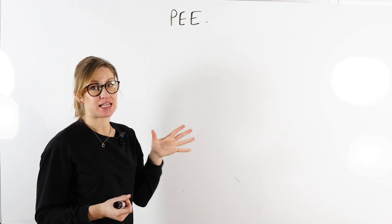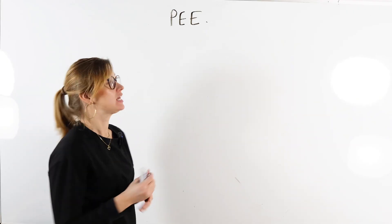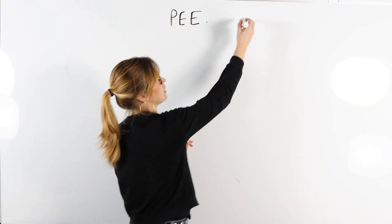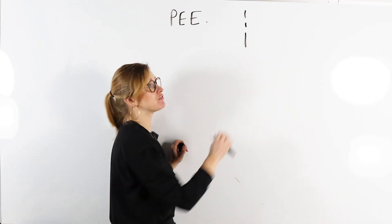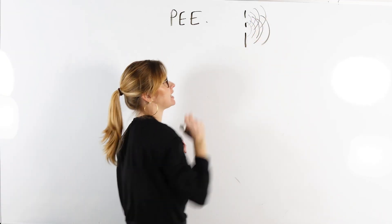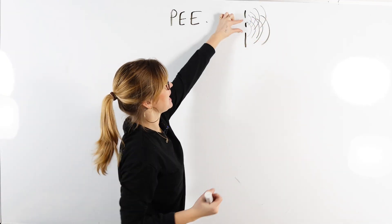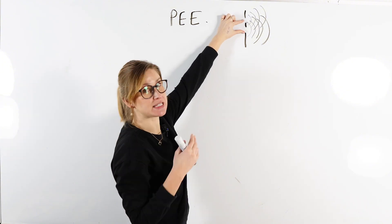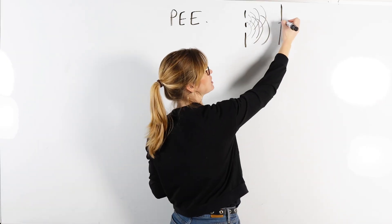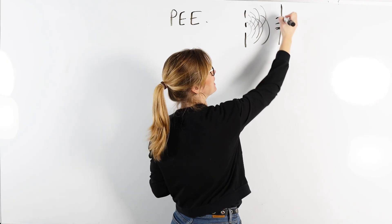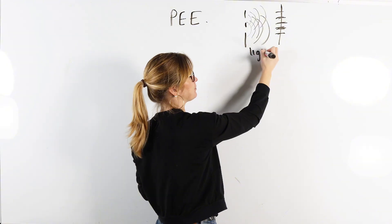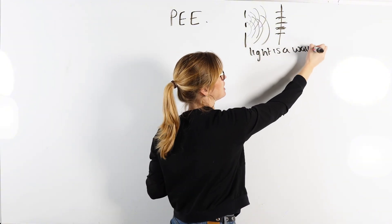We know that light is a wave because it gets diffracted. It spreads around an obstacle, as shown by the Young's double slit experiment. From that experiment, we have a source of light where the waves diffract, and if our waves are coherent — meaning they have a constant phase difference and the same frequency or wavelength — we will see an interference pattern on the screen, with constructive and destructive interference making bright and dark fringes. That's how we know light is a wave, because it diffracts.